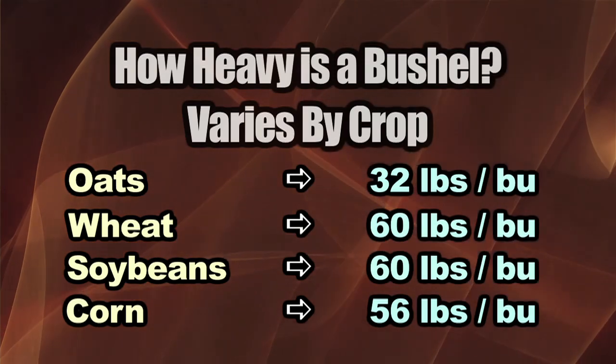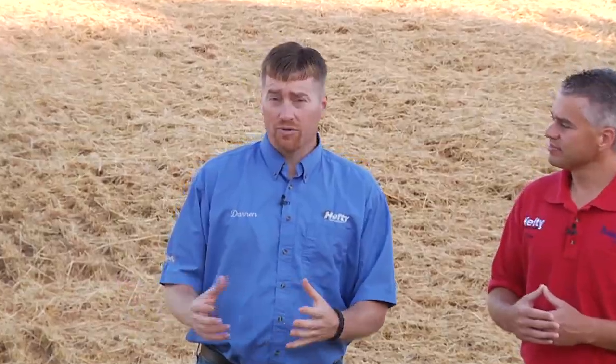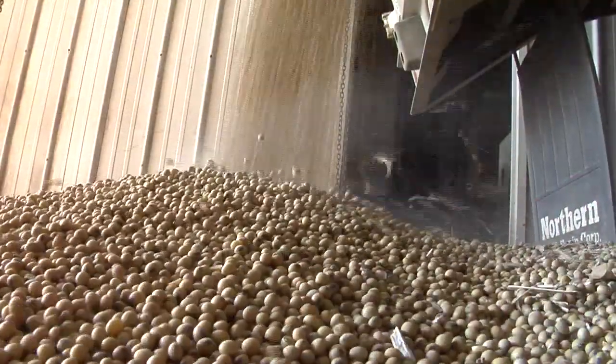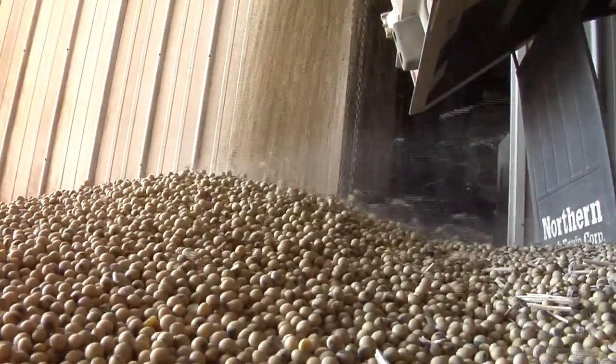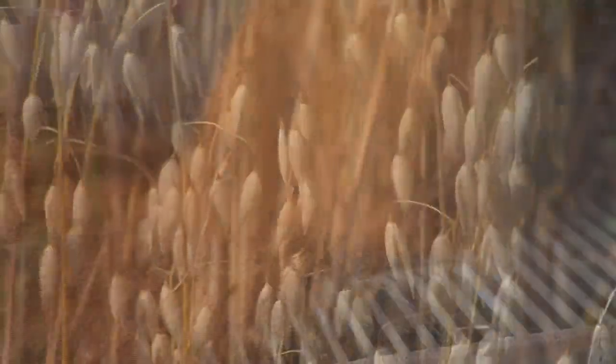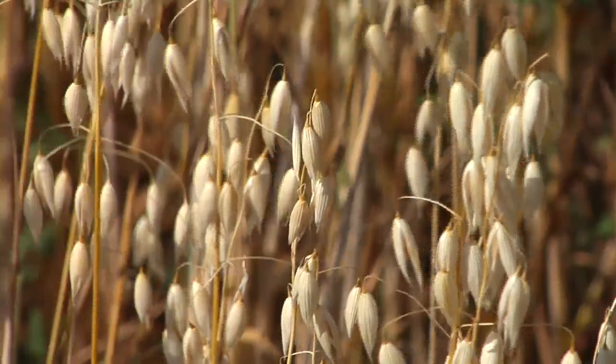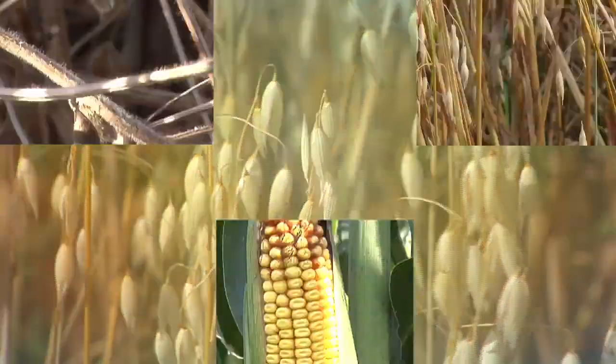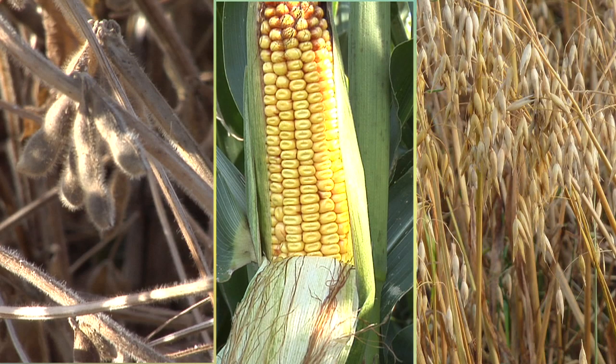Why is there a difference in weight for a corn bushel versus a soybean or wheat bushel? When something's going to be measured by volume, you're going to have different size kernels of seed. Soybeans are round — they may fill that bushel basket a little bit different than a corn kernel that's kind of flat. Oats are really a light kernel, so that's only 32 pounds in a bushel. Yeah, so it's density and shape.